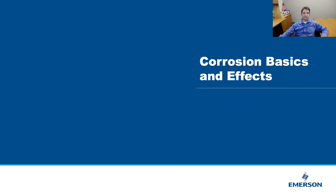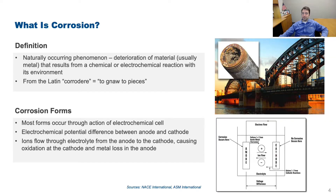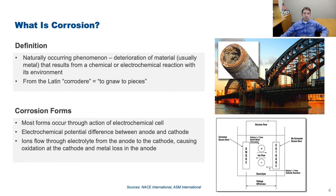So, corrosion basics and effects. What is corrosion? The short answer is that it's a naturally occurring phenomenon in which a material deteriorates as a result of chemical or electrochemical reaction with its environment. The Latin root of the word corrosion is 'corrodere,' which means 'to gnaw' — a very apropos description of what's actually happening. A prerequisite for corrosion to occur is a low-resistance, conductive environment with uninterrupted contact between two areas on a metal surface.